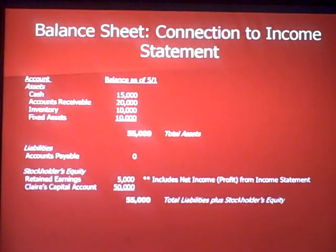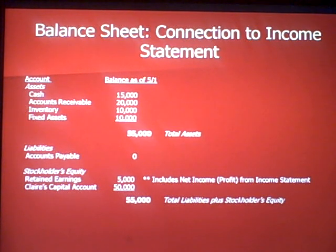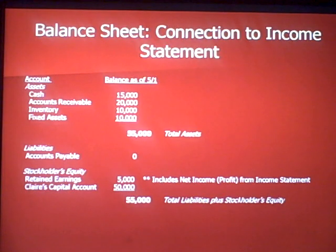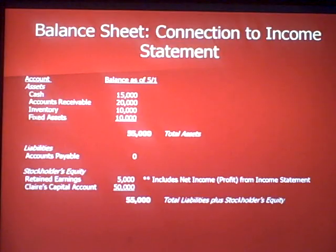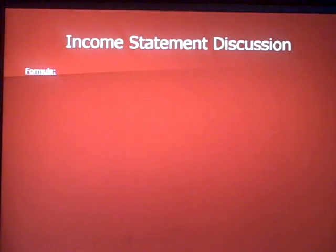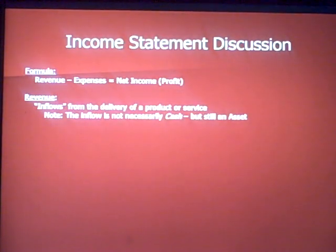We want to go back to the balance sheet from our prior video and make a connection between that and the income statement. Here's our balance sheet from top to bottom: assets, liabilities, and stockholders' equity. In italics, next to retained earnings, it says net income — profit comes from the income statement. That net income or profit goes into the retained earnings number.